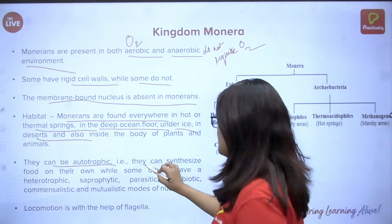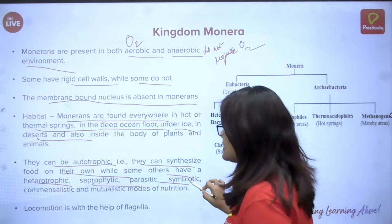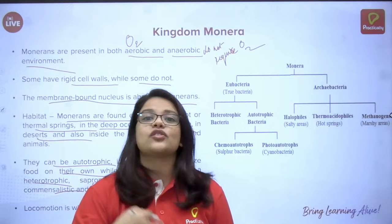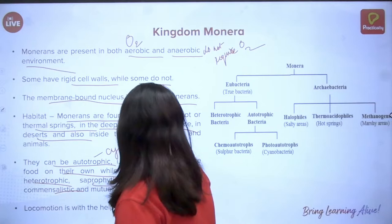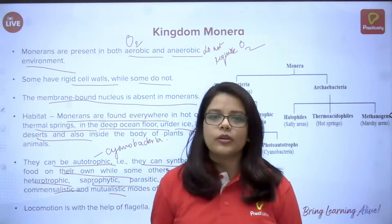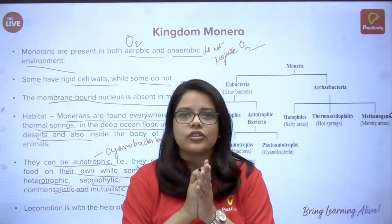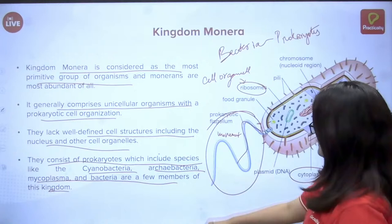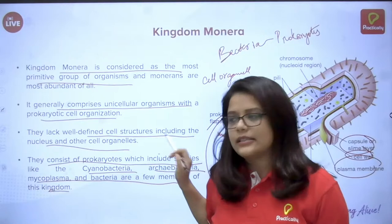Monera can be autotrophic — they can synthesize their own food, such as cyanobacteria — but some are heterotrophic, saprotrophic, parasitic, symbiotic, commensalistic, or mutualistic. There are so many kinds of species and so many types of nutrition. Locomotion is with the help of flagella — they move using this whip-like structure.